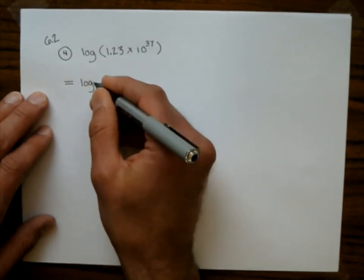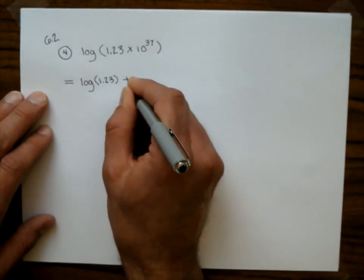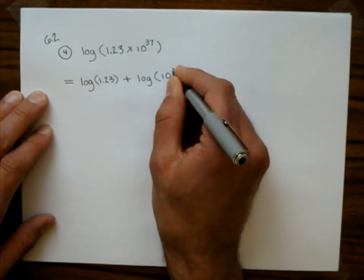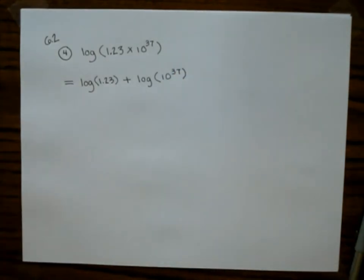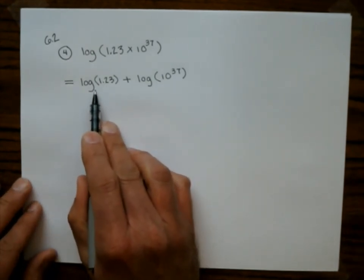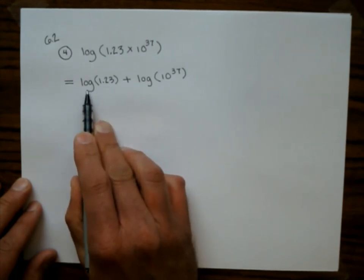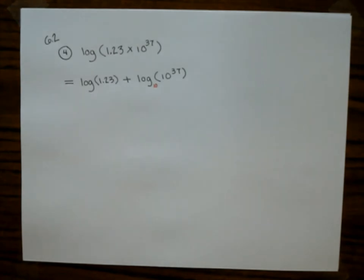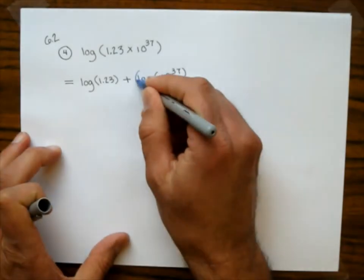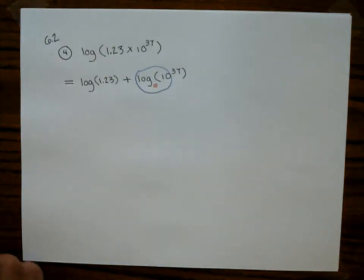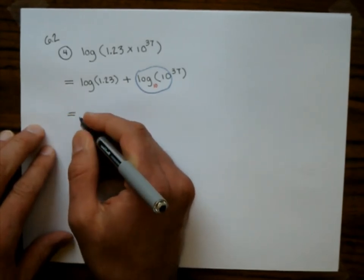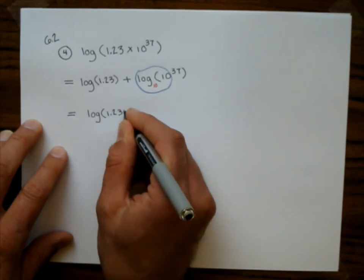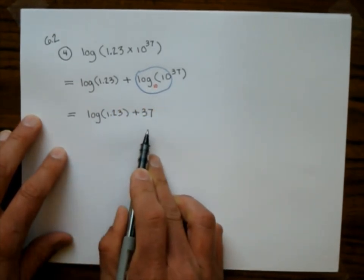So this is going to be the log of 1.23 plus the log of 10 raised to the 37th power. Log of 1.23 is log base 10, and there's no common base between 10 and 1.23, so there's nothing more we can do with that. This is log base 10 of 10 to the 37th, and using the 'popping property,' that gives us 37. So the answer is log of 1.23 plus 37.